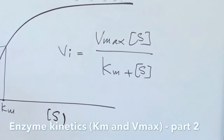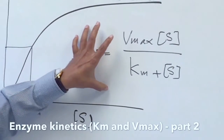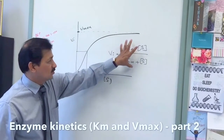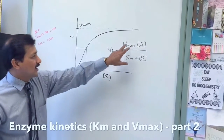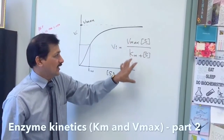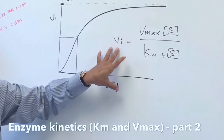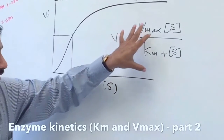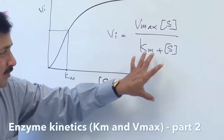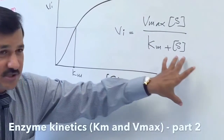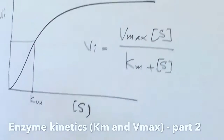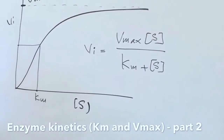This equation can be easily remembered using a mnemonic suggested by Amanda: 'Victoria's Secret, keep the secret.' This maps to: initial velocity equals Vmax times substrate concentration — 'Victoria's Secret' — divided by Km plus substrate concentration — 'keep the secret, Victoria's Secret.' That's how to remember this equation.